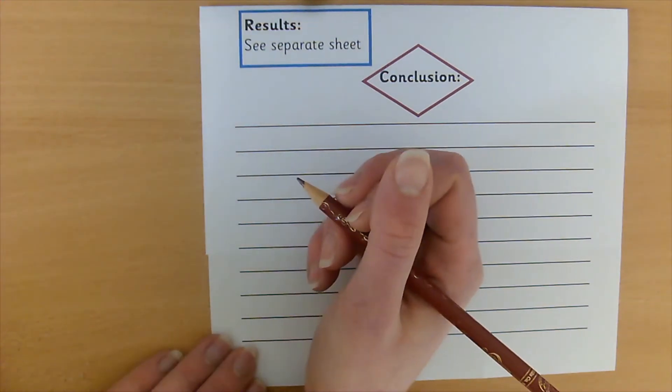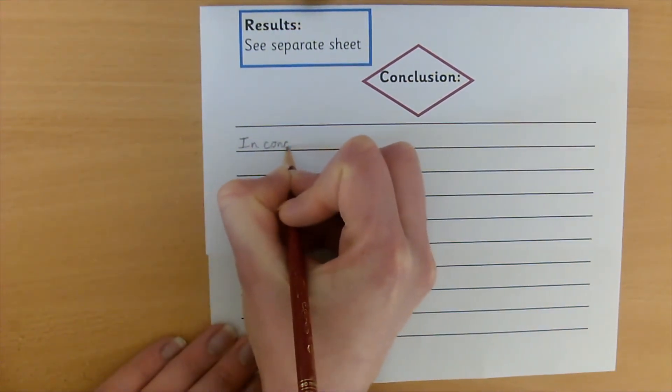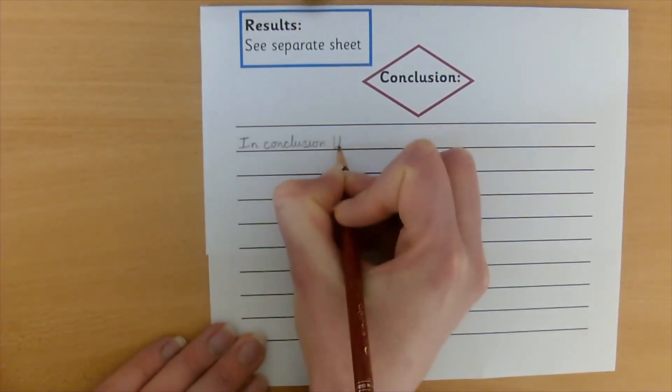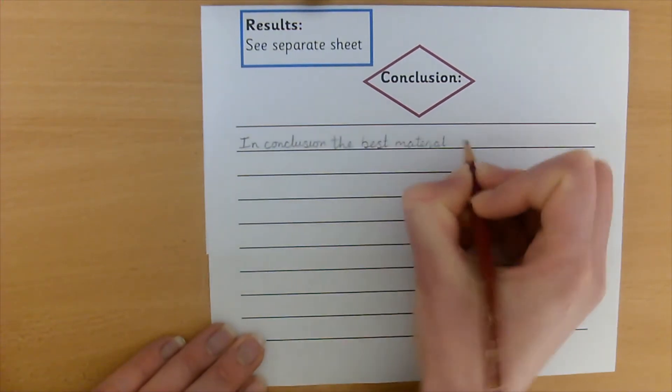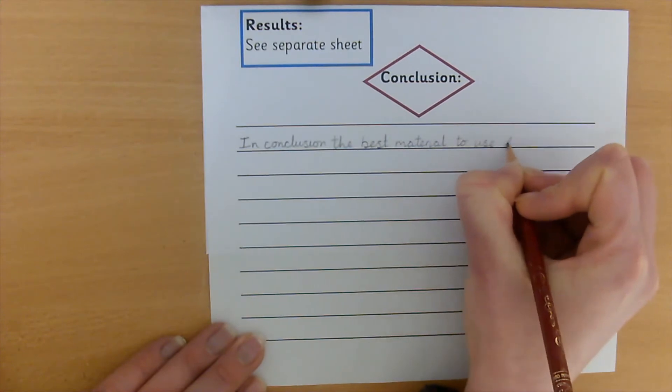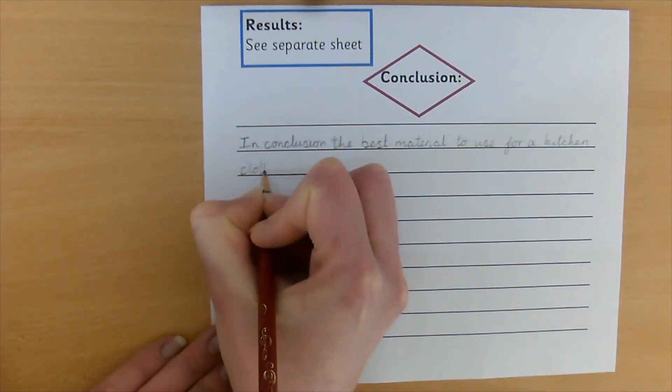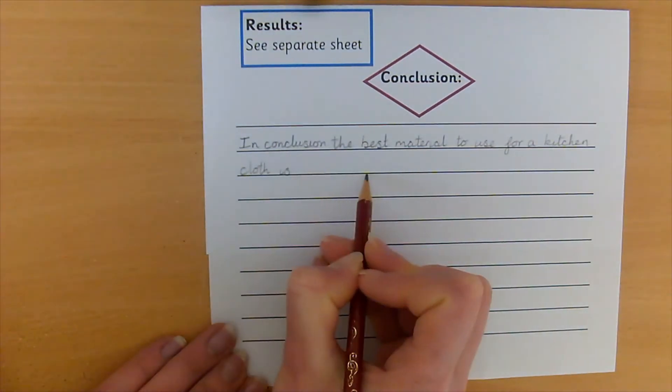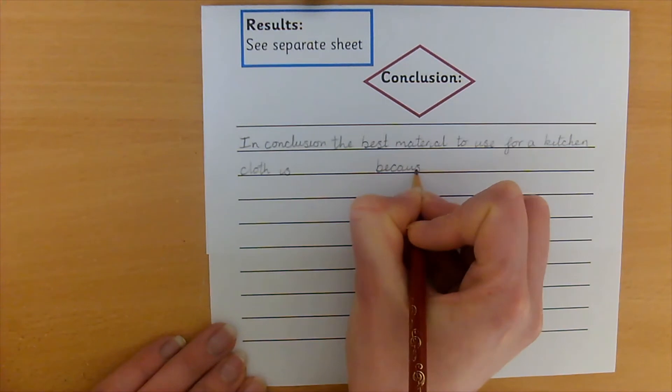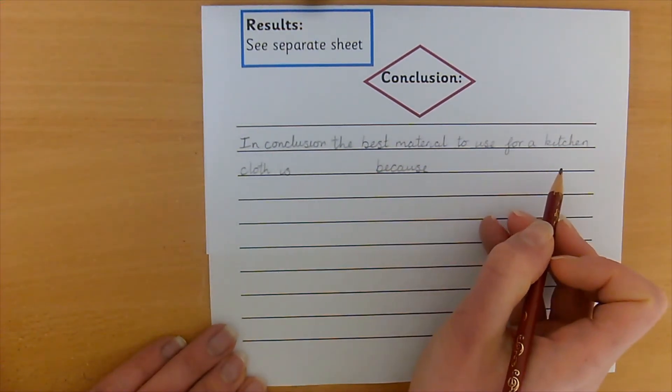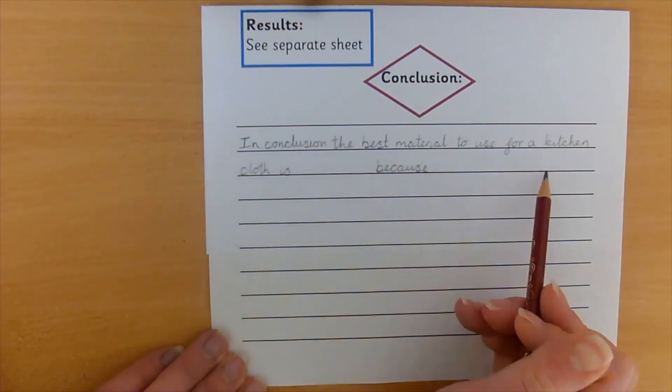So we can start our conclusion by writing in conclusion. It's a good way to start. In conclusion, the best material to use for a kitchen cloth. So pause the video. Write this sentence. Fill in this gap and write your reason. Off you go.